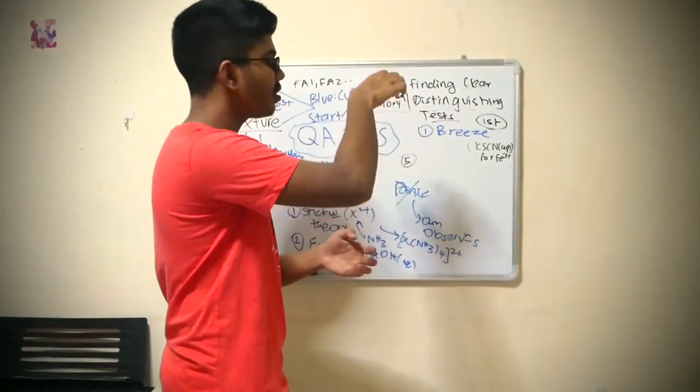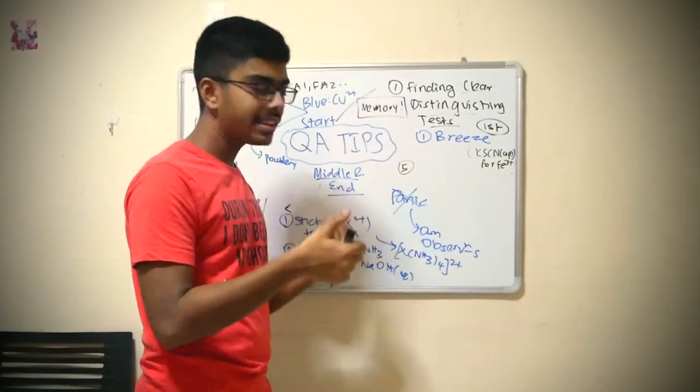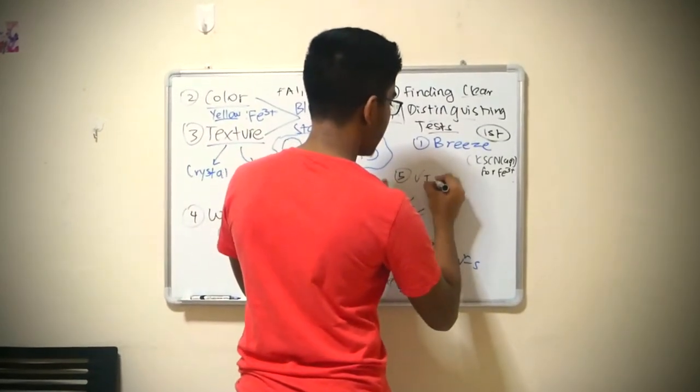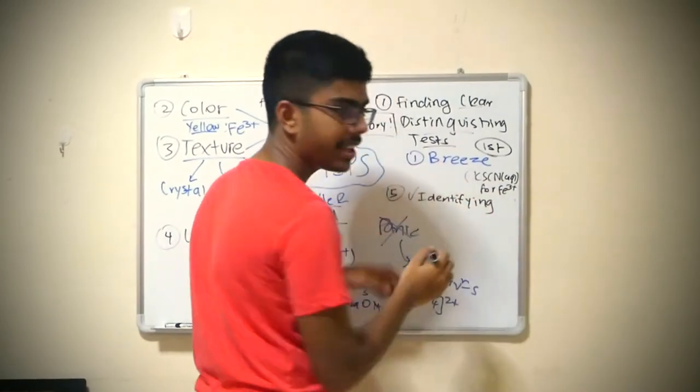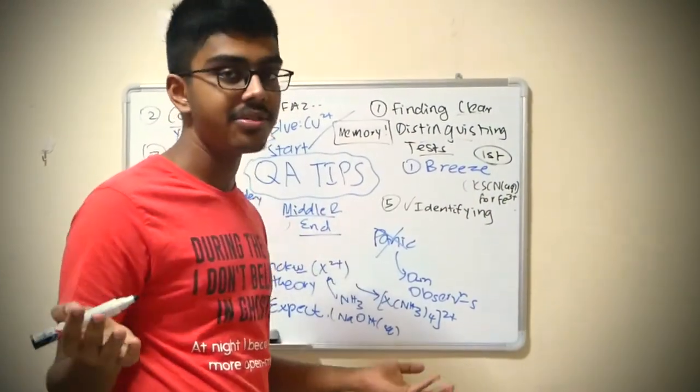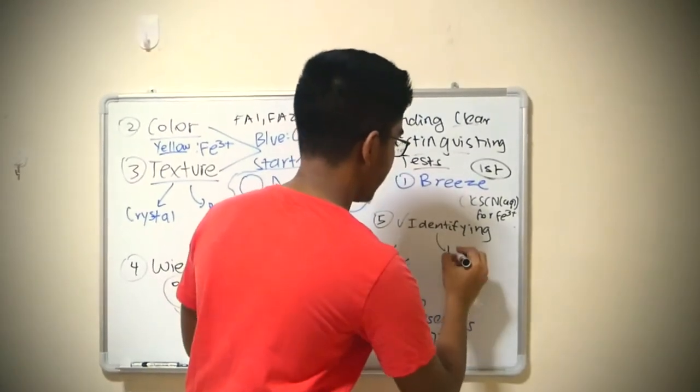Okay, the fifth one is probably more to the end. You identify the ions. You're done identifying. Once you're done identifying, it doesn't mean the exam Q&A is over. That's a big misconception. And people make mistakes.